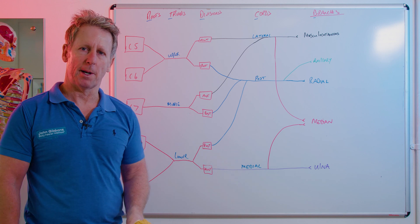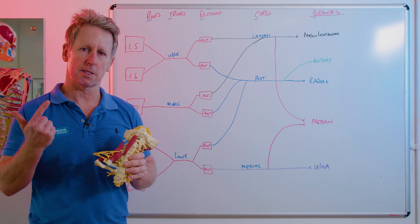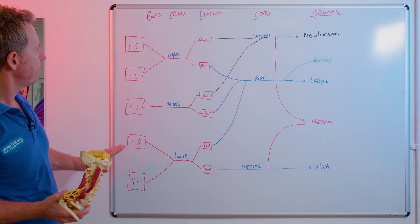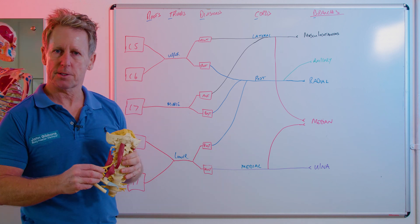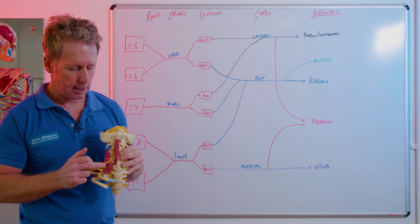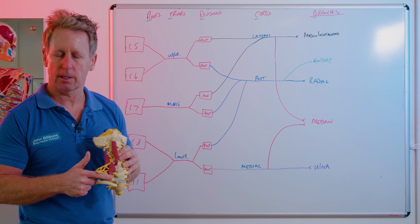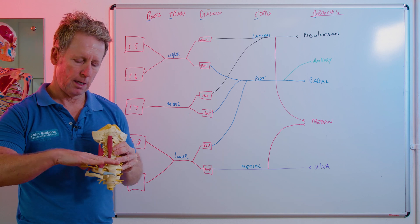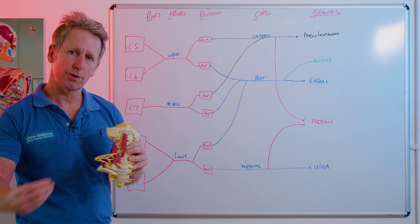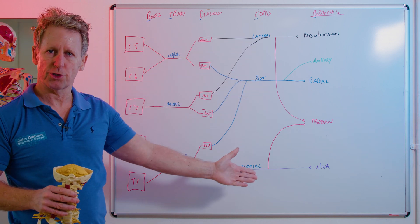Let's do a recap on the brachial plexus. It comes from the level of C5, C6, C7, C8, and T1 — these are the nerve roots rather than the level of the vertebra. You can see on this skeleton that it comes between the anterior and mid fibers of the scalene through the interscalene triangle, goes over the first rib, under the clavicle, underneath the pec minor, conjoins with the subclavian artery, and then naturally supplies the terminal branches.